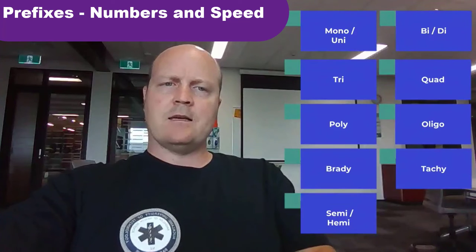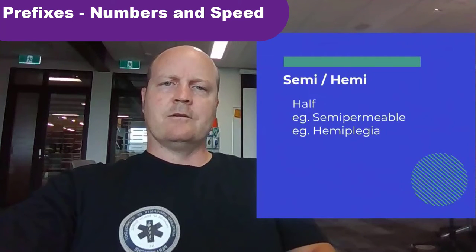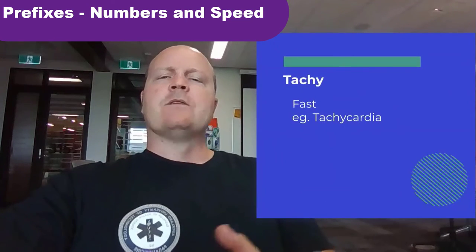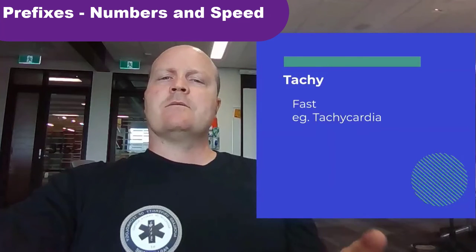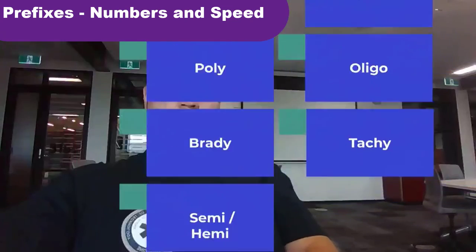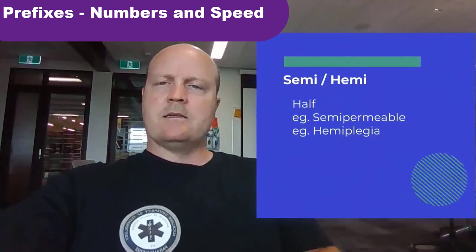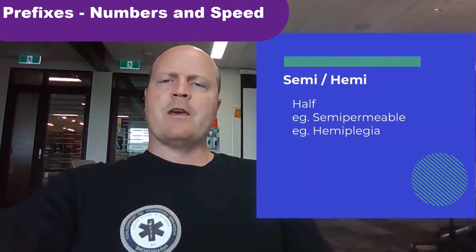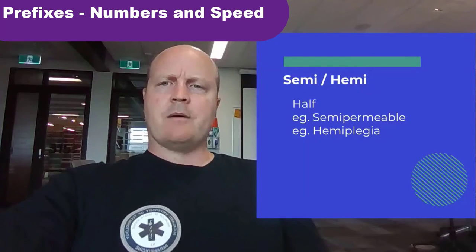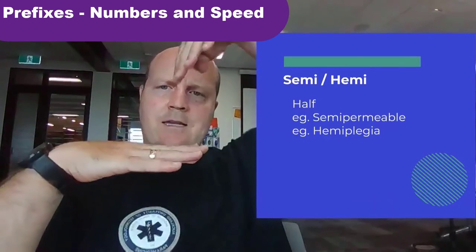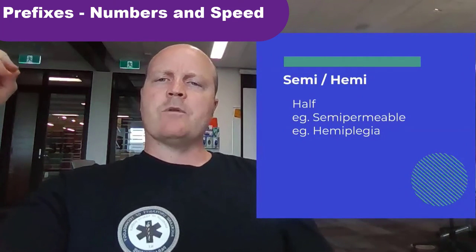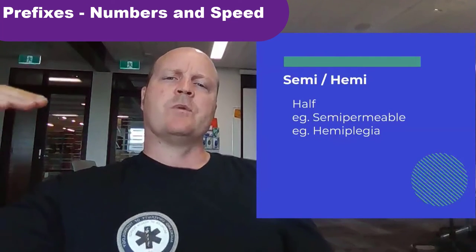The opposite of brady is tachy, which means fast. So tachycardia — cardia meaning heart — is a fast heart rate. Semi and hemi both mean part or half. A semi-permeable membrane is a wall that some things can pass through but others can't. Hemiplegia is when someone is paralyzed but it involves only half of the body.